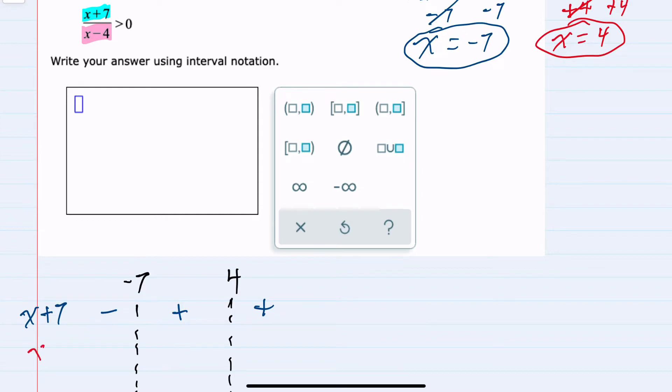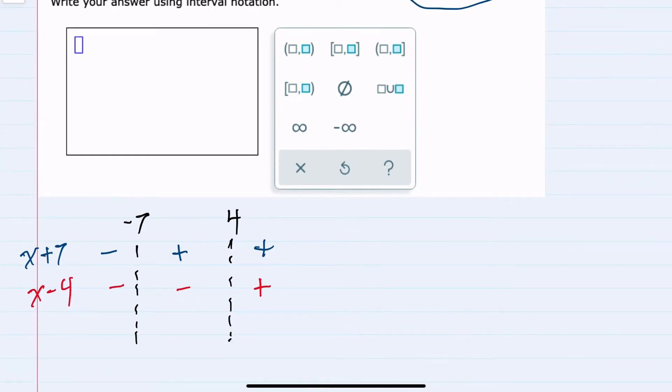Then for the denominator, x minus 4, if I plug a value in greater than 4, it would be positive. Less than 4 would give me a negative in the denominator. And since we're looking for where that expression is greater than 0, that would be where it is positive. Dividing a negative by a negative would give me a positive. Dividing a positive by a negative would be negative. And a positive over a positive would again be positive.